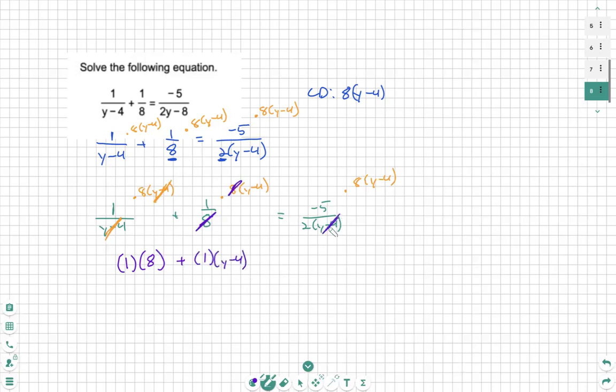Next, we see y minus 4 cancels and a piece of this 8 will cancel because 2 and 8 cancels leaving a 4. So what's left here is we have negative 5 in parentheses multiplied by 4 in parentheses.